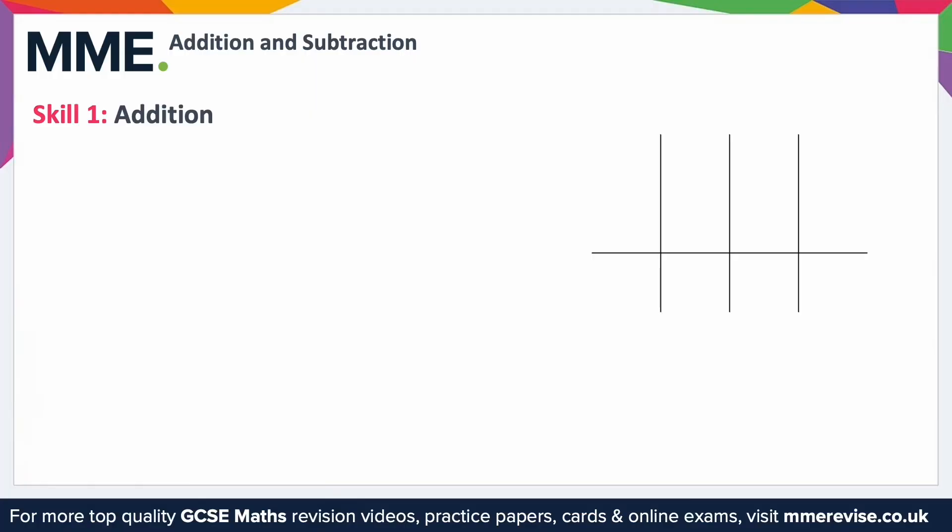Skill one: addition. The idea behind the column method is splitting the number up into its place values—the ones, the tens, the hundreds, and so on. Then you can add those individually. This breaks it down to adding effectively just single digits every time, so you can handle really big problems without having to worry.